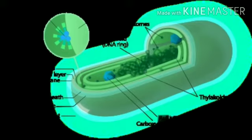Cyanobacteria are prokaryotic unicellular organisms that have chlorophyll and make their own food by photosynthesis. Therefore, their mode of nutrition is autotrophic.